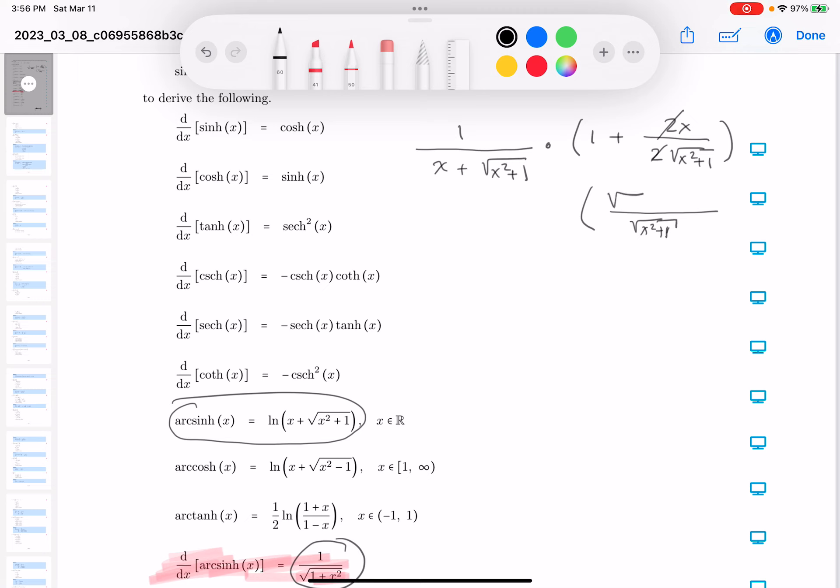Then what do you get? You get this. And that would be what? Plus x, right? And what do you get over here? You get 1 over x plus the square root of x squared plus 1.